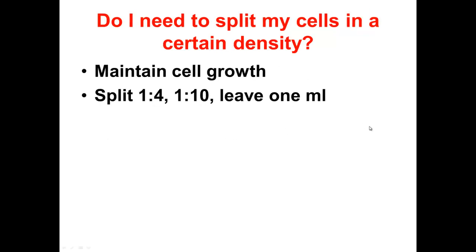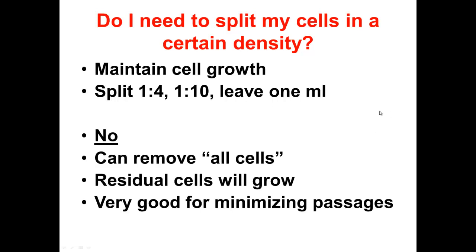Last question: do I need to split my cells into a certain density? Splitting cells is necessary to maintain continuous growth and to keep them healthy, to prevent cells from becoming overgrown. I'm sure your PI or technician told you to pass your cells every 2 or 3 days at a 1 to 4 or 1 in 10 ratio, or maybe leaving 1 mil of your cells after you resuspend them in media after trypsinization. And for the last time, the answer is no — there is no set ratio that you need to pass your cells in.